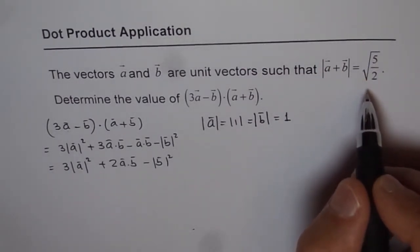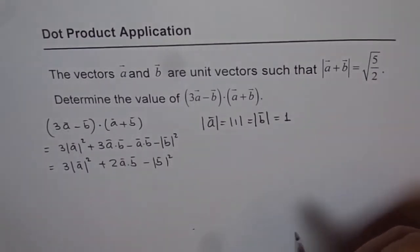And you also know that a plus b magnitude is 5 over square root 2. That helps to find the angle between the two.